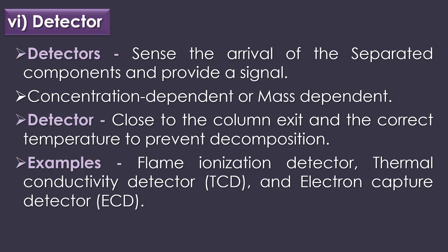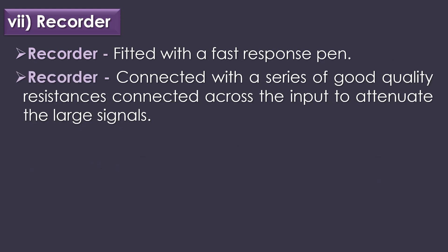The sixth part of gas chromatography is detectors. Detectors sense the arrival of the separated components and provide a signal. Detectors are either concentration dependent or mass dependent, and should be close to the column exit at the correct temperature to prevent decomposition. Common examples of gas chromatographic detectors are the flame ionization detector, thermal conductivity detector, and electron capture detector. The seventh part is the recorder, which should be fitted with a fast response pen of one second or less, connected with a series of quality resistances to attenuate large signals.